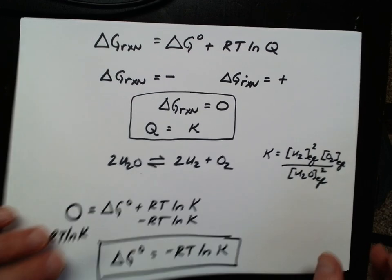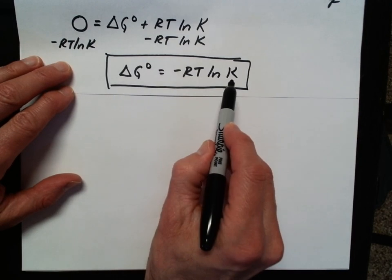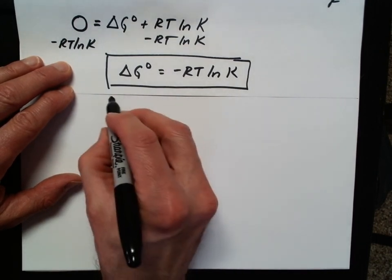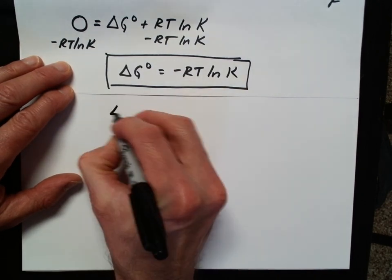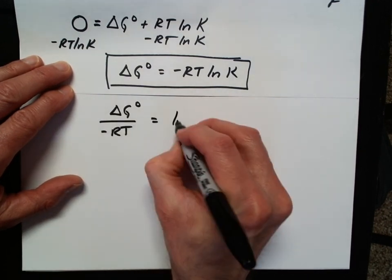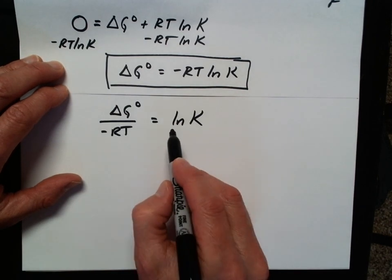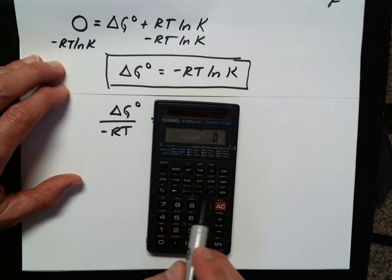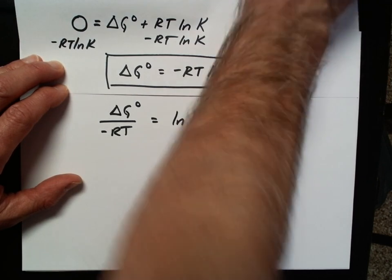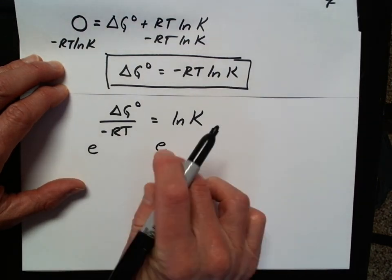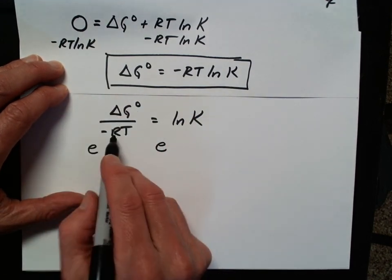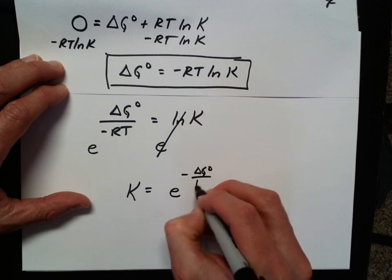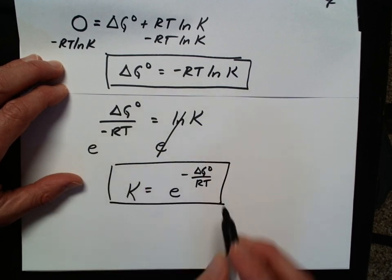I want to make sure you know how to flip back and forth between these. If I have the equilibrium constant and want to calculate delta G, that's straightforward. But if I have delta G and want the equilibrium constant, I divide both sides by negative RT. Then, since the inverse function of natural log is e to the x — you can see it on the calculator with shift giving e to the x — I raise both sides to that power. This gives an equation: K equals e to the power of negative delta G standard over RT.